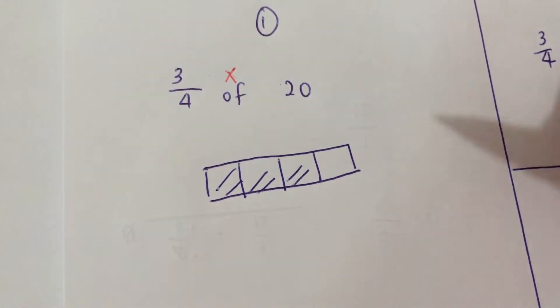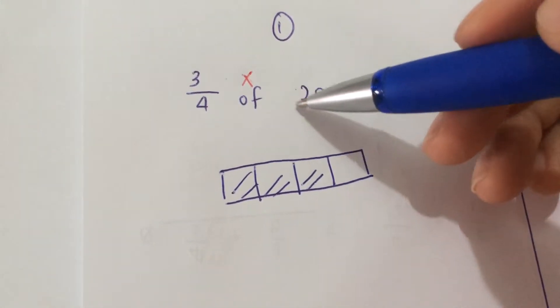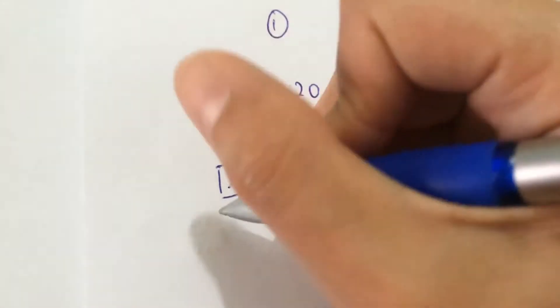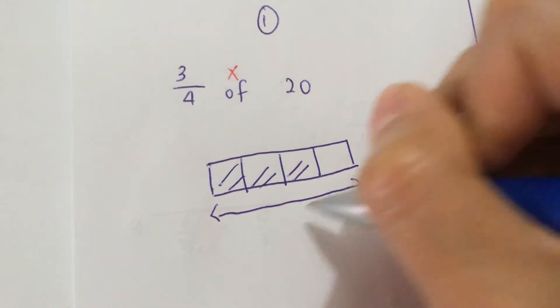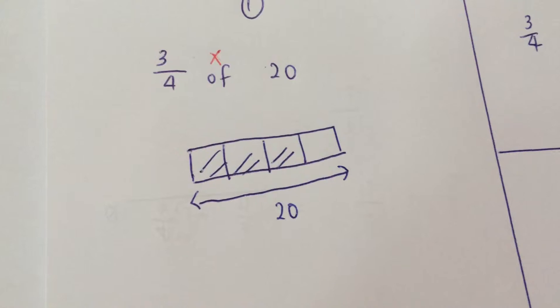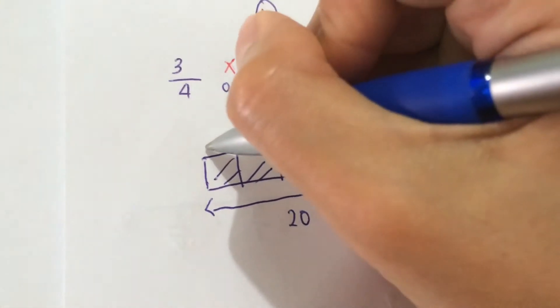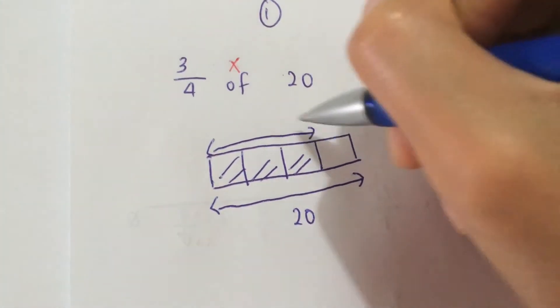Now, the total is also 20, so you label your model. And you want to find these 3 parts here.